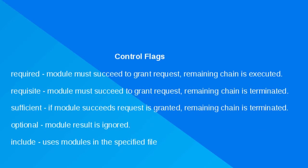Control flags control the criticality of the module. Required means the module must succeed for the request to be granted; the remaining modules in the chain are executed, but access is denied. Requisite means the module must succeed; if it fails, the chain is terminated and the request is immediately denied. Sufficient means if the module succeeds, the request is granted immediately and the chain is terminated. Optional means the module result is basically ignored or treated like a success. Include grafts the modules from the specified file into the facility.